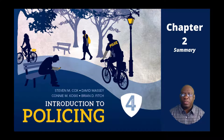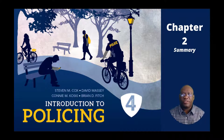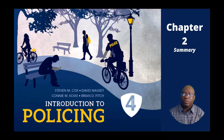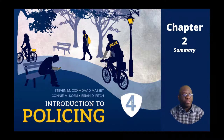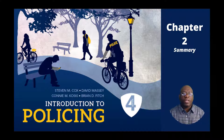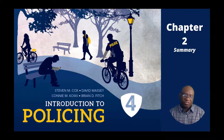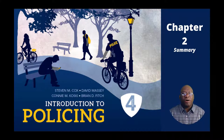Chapter 2: A Brief History of Police in the United States. The learning objectives for this chapter are as follows. The chapter examines the influence of English policing on the American police. It describes the influence of technology on the evolution of early US policing.